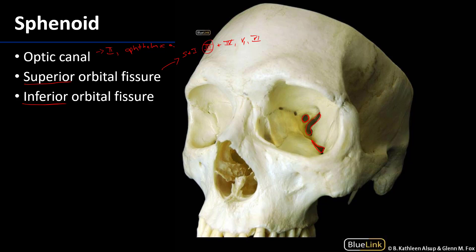Recall that cranial nerves 3, 4, and 6 are all serving the extraocular muscles. In addition, sympathetic fibers also make their way through the superior orbital fissure, and finally elements of the ophthalmic veins — there are superior and inferior divisions — with branches of both generally going through the superior orbital fissure.